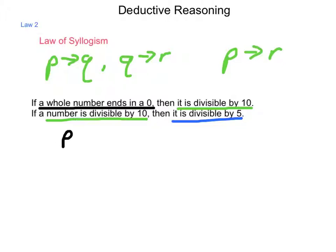...we say if a whole number ends in 0, then it is divisible by 5. We can skip the middle part and have a valid conclusion.